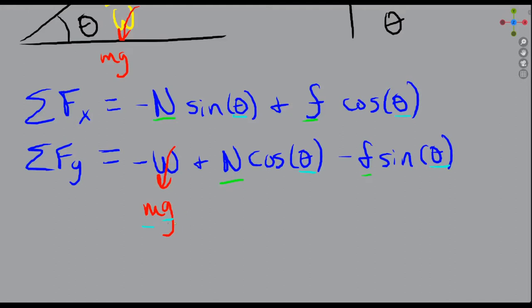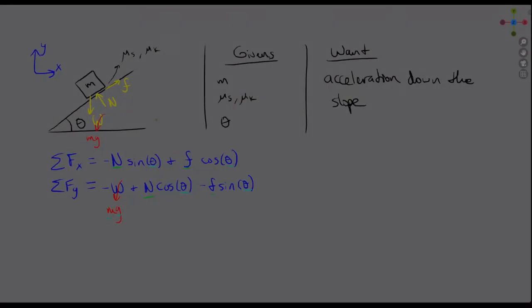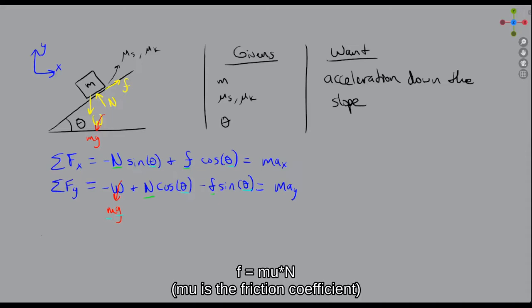We know w equals mg, and we know m and g. We don't know n or f, but we also know theta. However, we don't just want to look at if it's stationary — we want some acceleration in x and some acceleration in y. So we don't actually have two unknowns; we have four because we have ax and ay. We could find an equation to compare ax and ay, and then use the equation of friction with the coefficient of kinetic or static friction multiplied by the normal force, getting us to three equations for three unknowns.